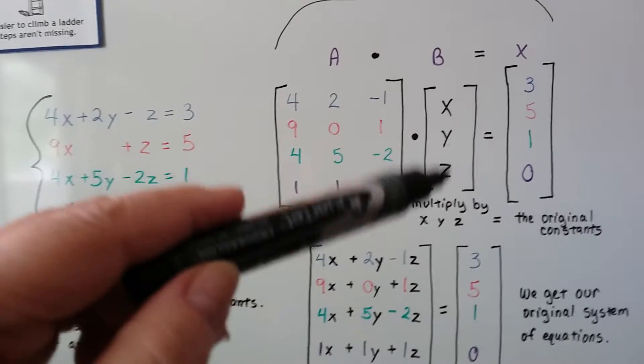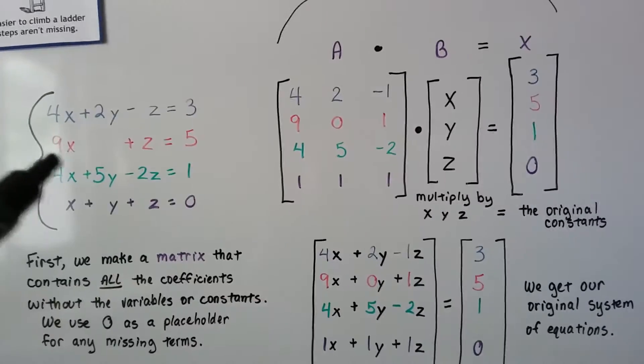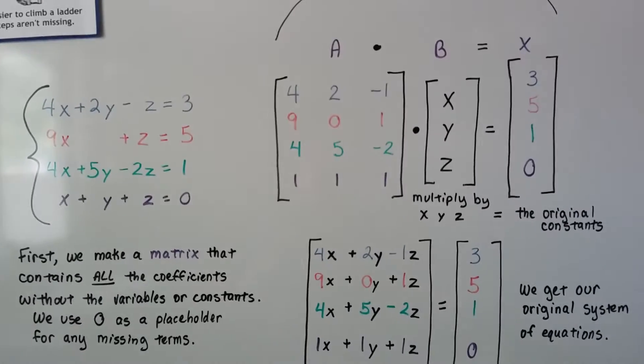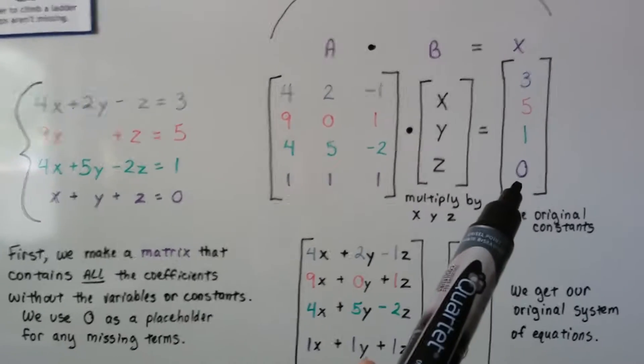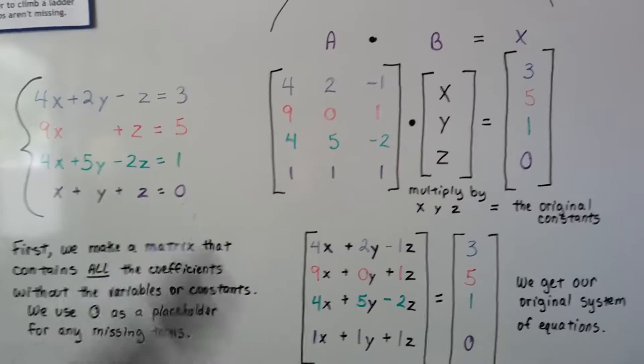For the next matrix, we put x, y, z because those are the variables. And then in our last matrix here, we put what they equal.